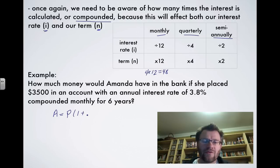So A equals P, which is your principal, multiplied by 1 plus I, all raised to the power of N. Now, things you need to remember. Our principal is $3,500. Our interest rate here, it's a 3.8 annual interest rate, but it's being compounded monthly, so that's 3.8 divided by 12.